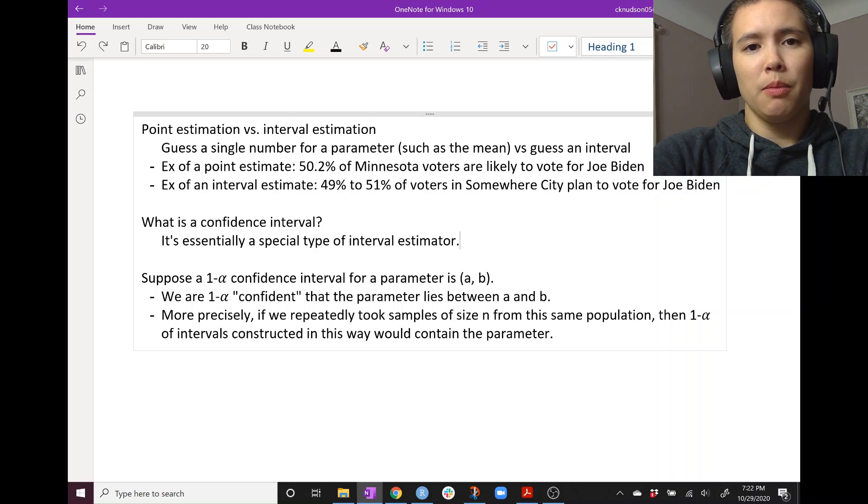First, let's back up a step and think about estimating a parameter. Remember a parameter is a fixed unknown number and we're trying to use data to take a guess at what that fixed unknown number is. We can do that in a couple of ways. One way is to just guess a single point to estimate our parameter. Another way is to guess an interval and this will obviously cover some more values.